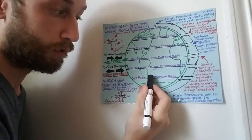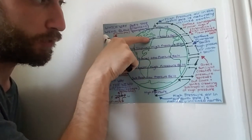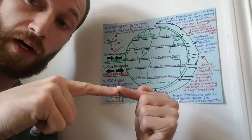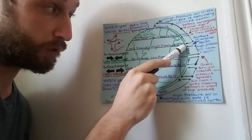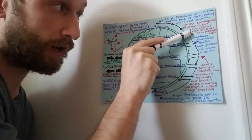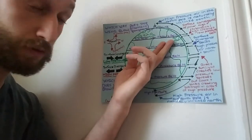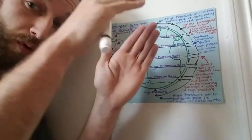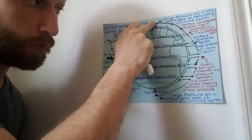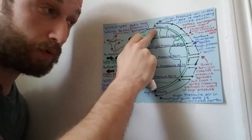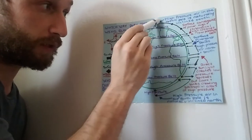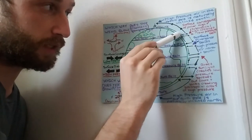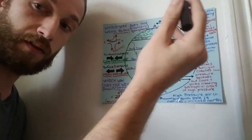This creates what we call subpolar low pressure belts. That converging high pressure air from the north pole and from the subtropical high pressure belt causes air to rise. When that air rises, it has a similar phenomenon to convection currents at the equator — the air rises, spreads out in the tropopause, hits the north pole, becomes higher pressure, and sinks again, starting that whole cycle over. Very predictable, oscillating patterns of air rising and sinking at different latitudes.